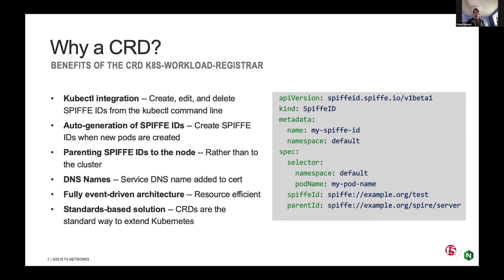We support auto-generation of Spire IDs as well. The Kubernetes workload registrar can auto-issue certificates based on pods being created and then clean up the Spire server when they're deleted. We do parenting of Spire IDs to the node, which gives an extra level of security — the particular Spire ID is tied to that node, so you can't use that workload on a different node it's not authorized to run on. We also add DNS names to the certificates, which was actually our main reason for developing the CRD.